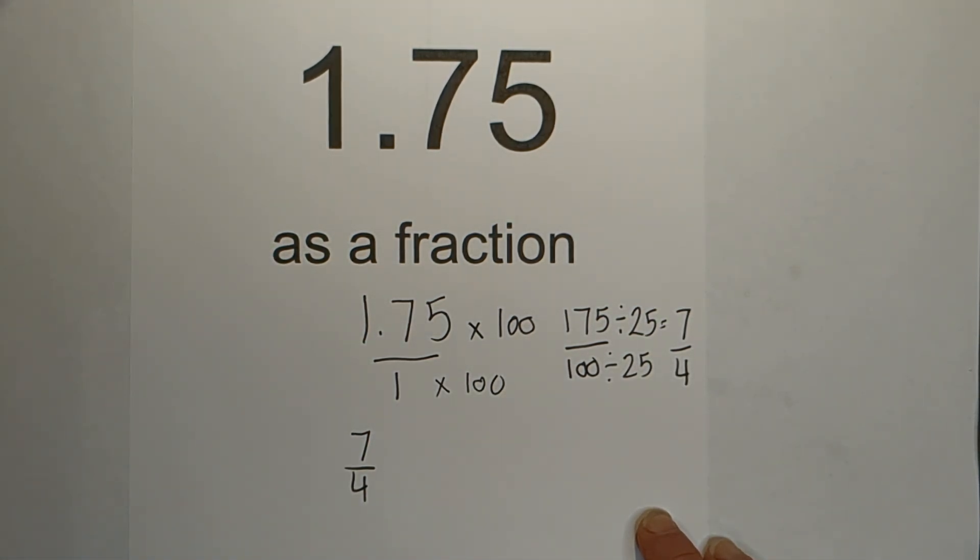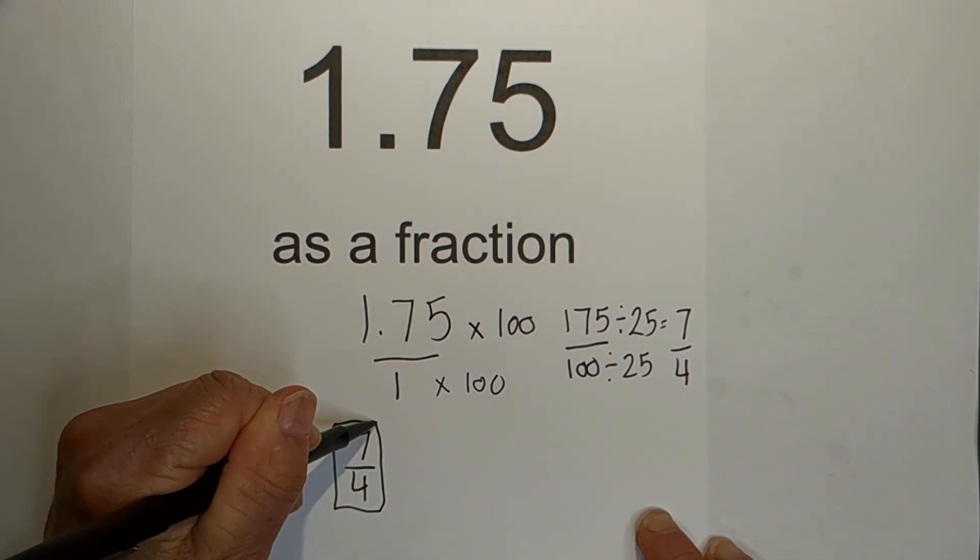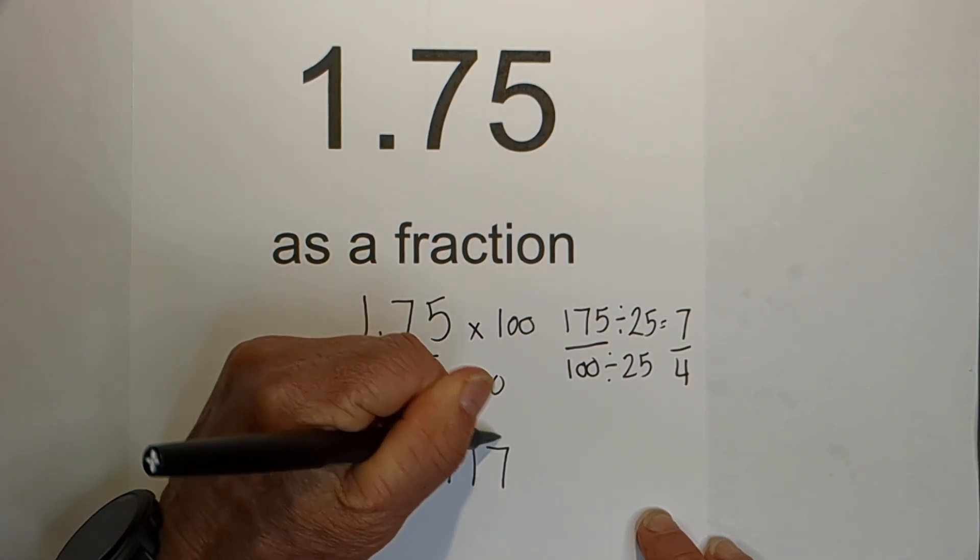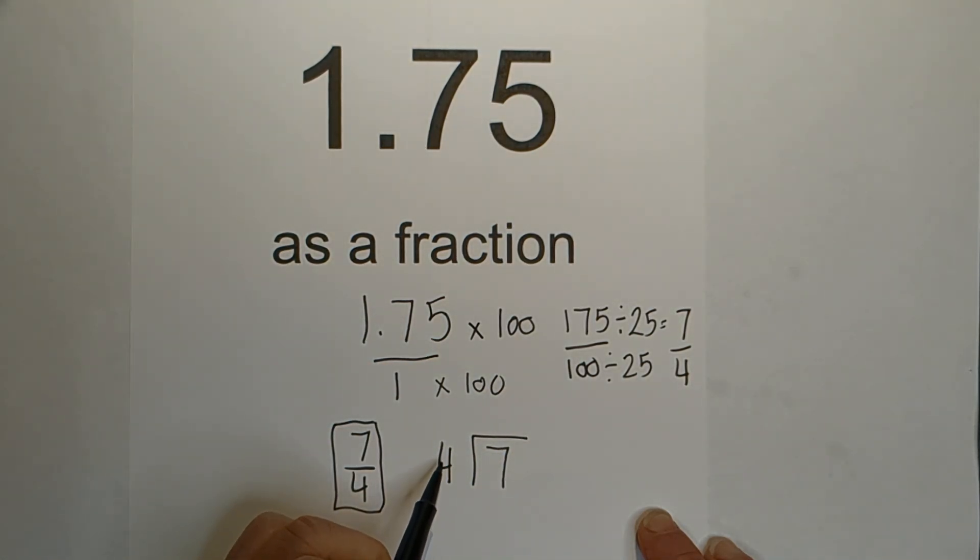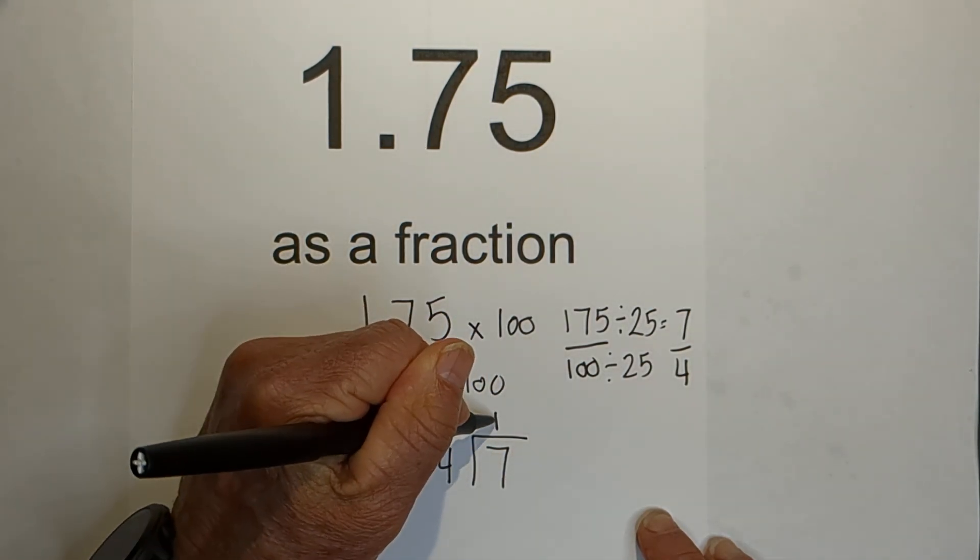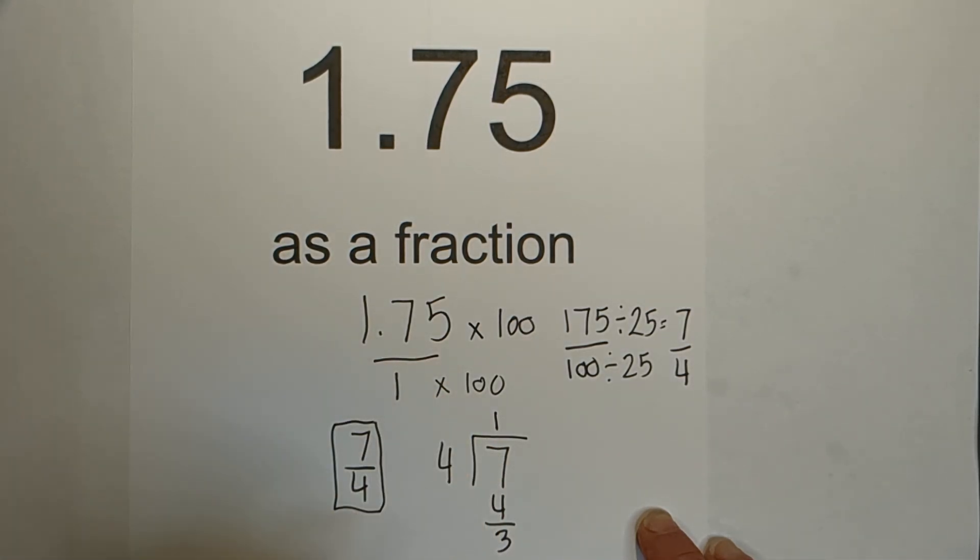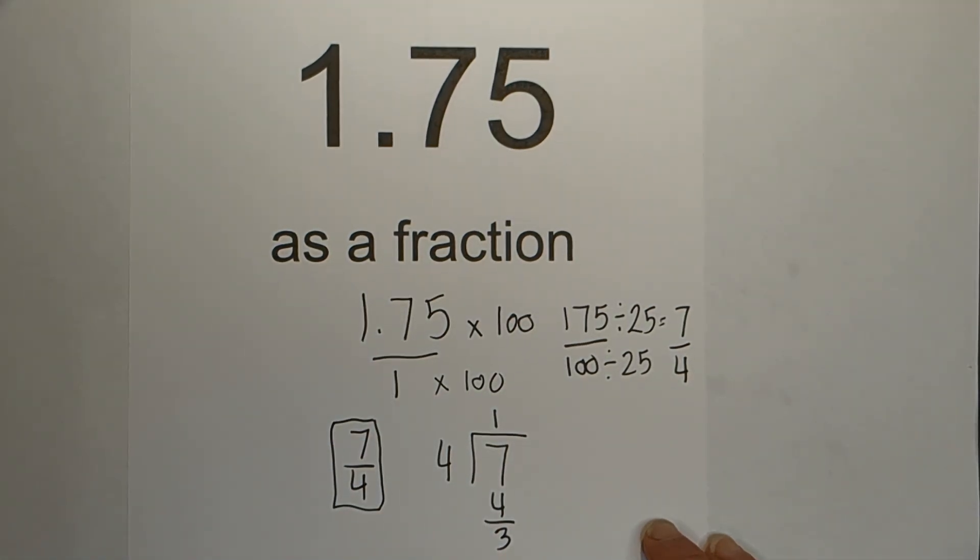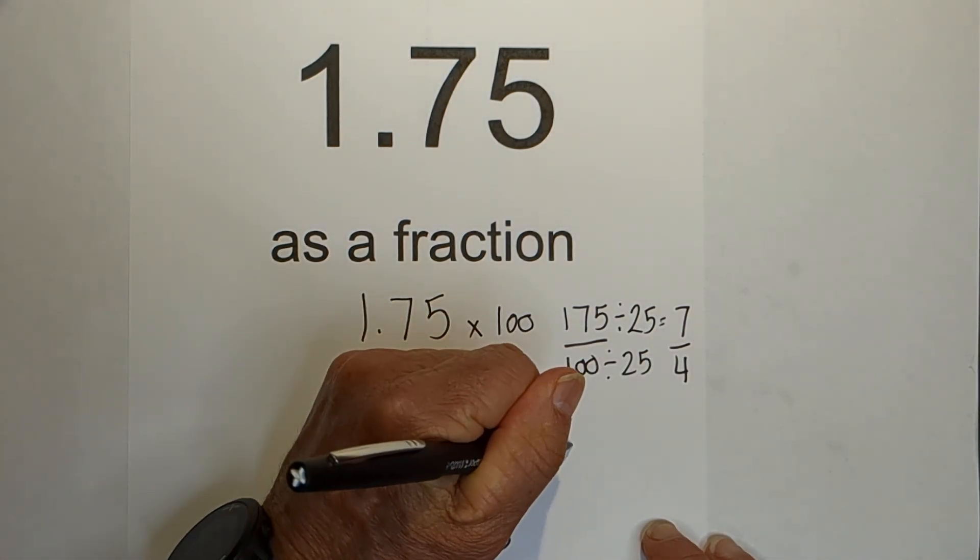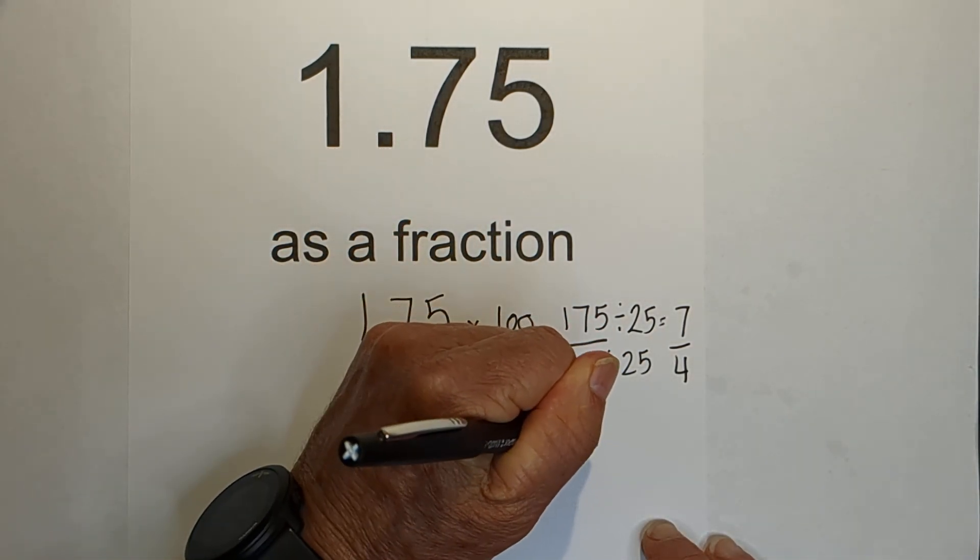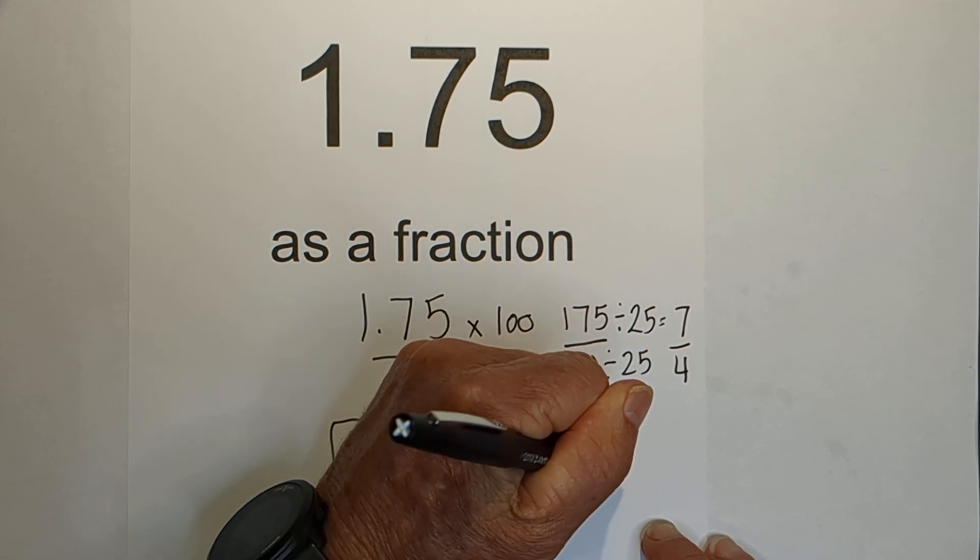So there it is as an improper fraction. And if you'd like, you can convert it into a mixed number by dividing 7 by 4. 4 goes into 7 one time, 1 times 4 is 4. That gives us a remainder of 3, so as a mixed number it's 1 and 3 fourths.